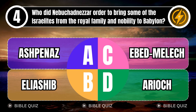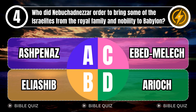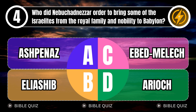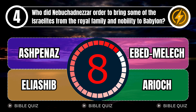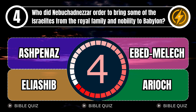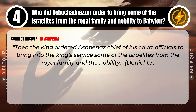Question 4: Who did Nebuchadnezzar order to bring some of the Israelites from the royal family and nobility to Babylon? A. Ashpenaz. B. Eliashib. C. Ebed-Melech. D. Ariok. Correct answer: A. Ashpenaz. Explaining the Bible — then the king ordered Ashpenaz, chief of his court officials, to bring into the king's service some of the Israelites from the royal family and the nobility. Daniel 1 verse 3.